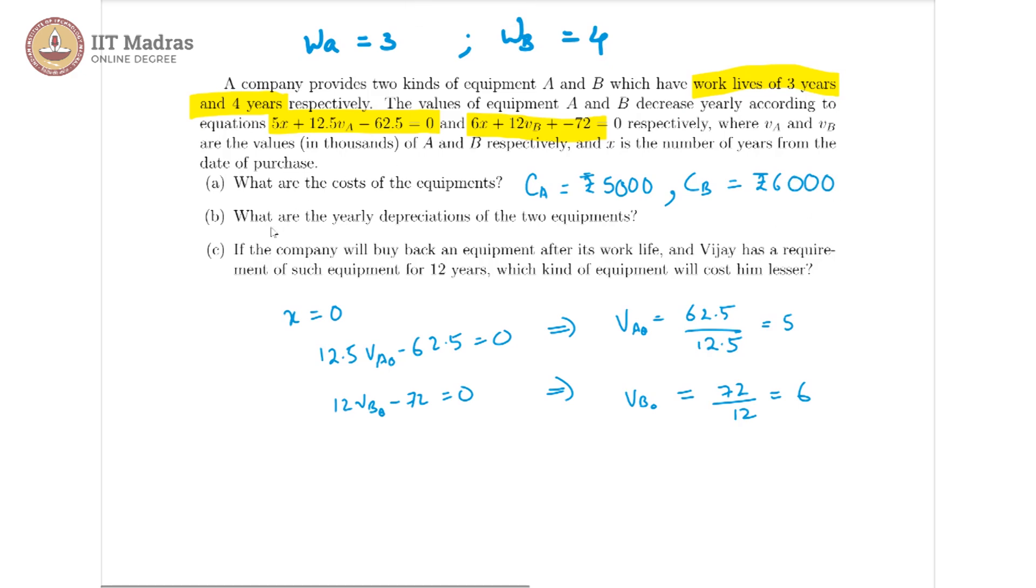Going further, we are asked what are the yearly depreciations of the equipments? So yearly depreciation basically means how much value is decreasing each year. So let us look at that here. In this case, x is x number of years whereas y is the value. So what is being asked in yearly depreciation is the change in y for a unit change in x, which is basically just the slope.